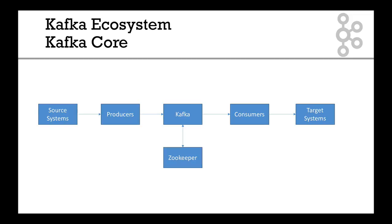In this video we're going to see the whole Kafka ecosystem. This is Kafka core and it's the core APIs of Kafka — they've been around for a long time and everything on that slide will be covered within this course. You have source systems and producers that push data to Kafka. Kafka, as you can see in the middle, is managed by ZooKeeper, and then consumers get data out of Kafka and push it into target systems. There's a lot to know and learn about Kafka, ZooKeeper, and what producers and consumers do.